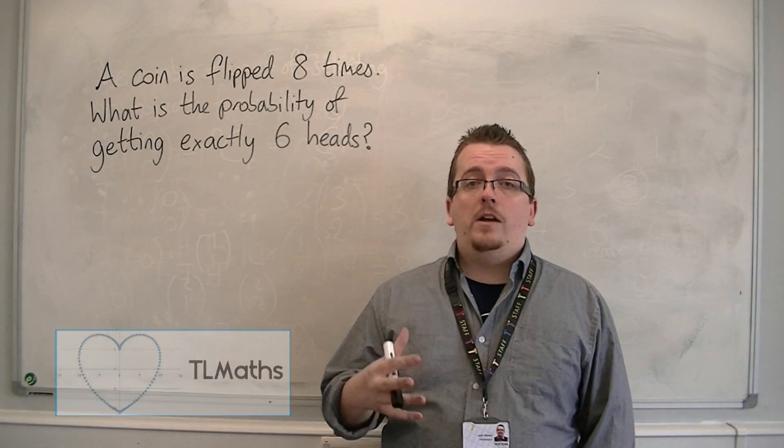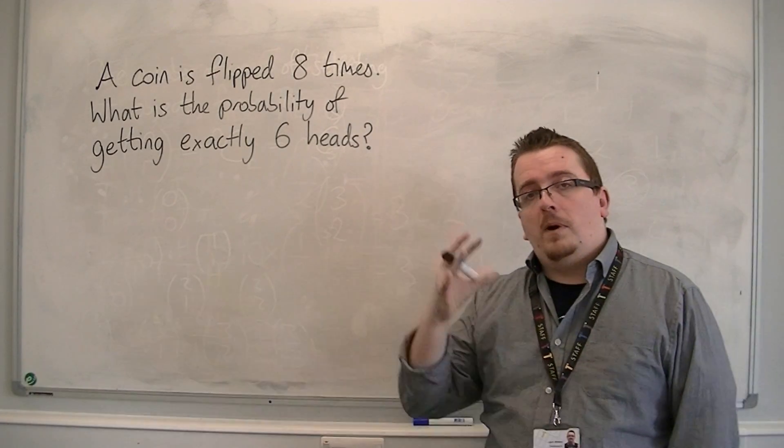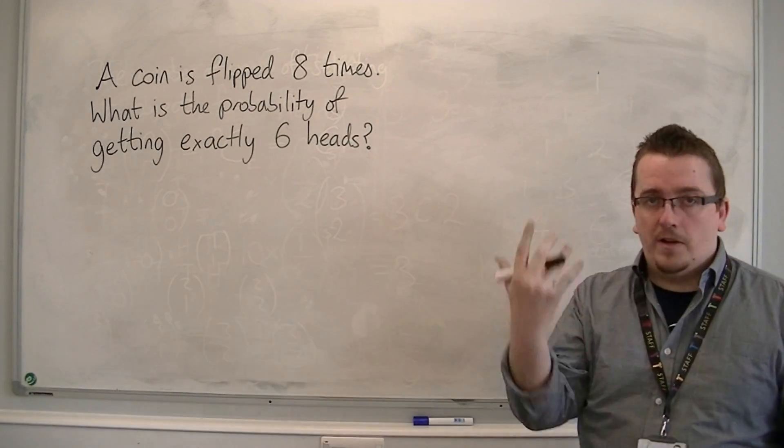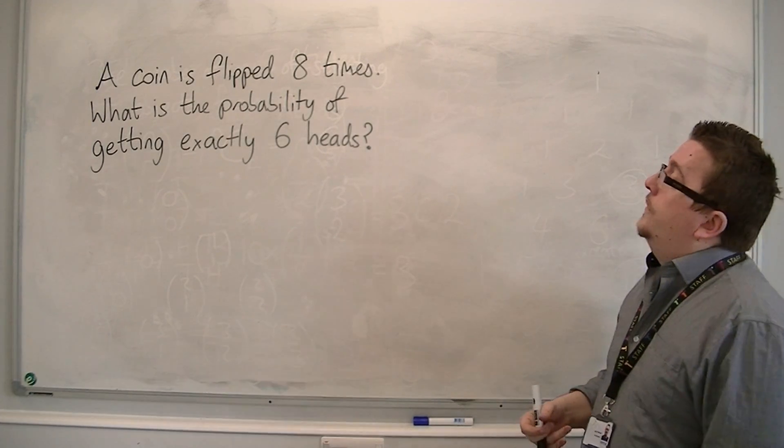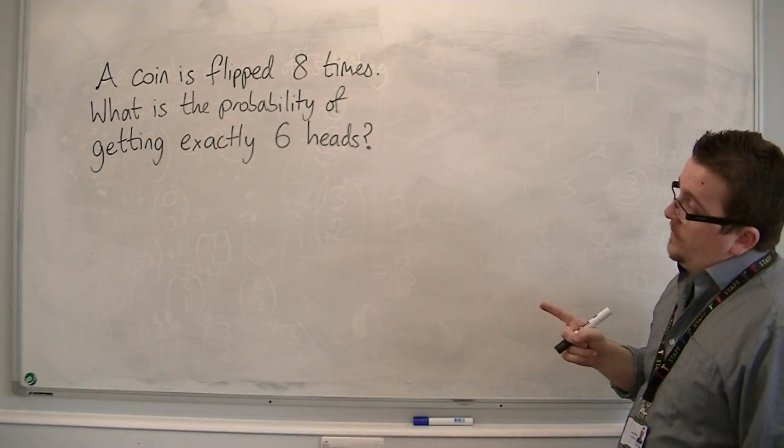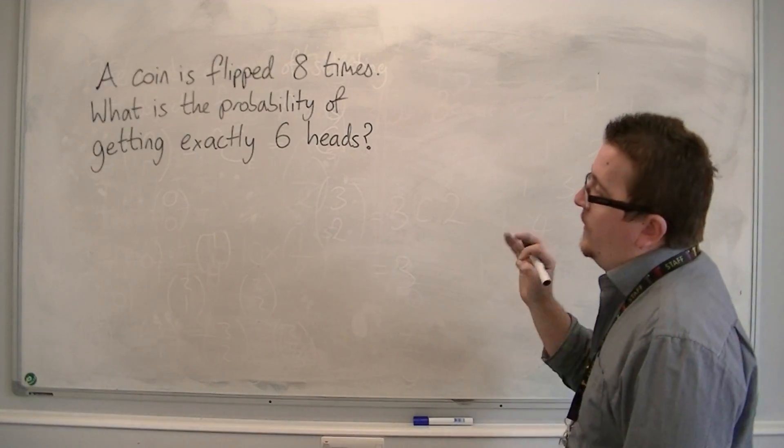In this video I want to show you how to solve a very simple problem like this, following on from our previous video on Binostat, Arcade Machine and the Pascal's Triangle. So a coin is flipped 8 times. What is the probability of getting exactly 6 heads?